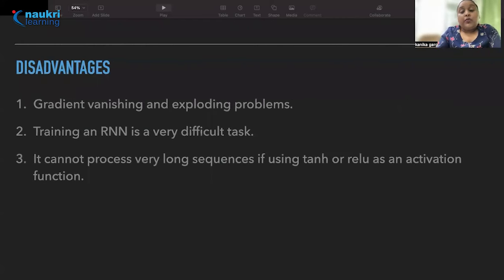But of course whenever there are advantages there are certain disadvantages associated with them also. It has two major disadvantages, one is gradient vanishing and exploding problems. So let's talk about the vanishing gradient problem first. Recurrent neural networks enable you to model time dependent and sequential data problems such as stock market prediction, machine translation, speech generation. However, sometimes RNN is hard to train because of the gradient problem. It suffers from vanishing gradients. That means the gradients carry information used in the RNN and when the gradient becomes too small, the parameters updates become insignificant. This makes the learning of the long data sequences difficult.